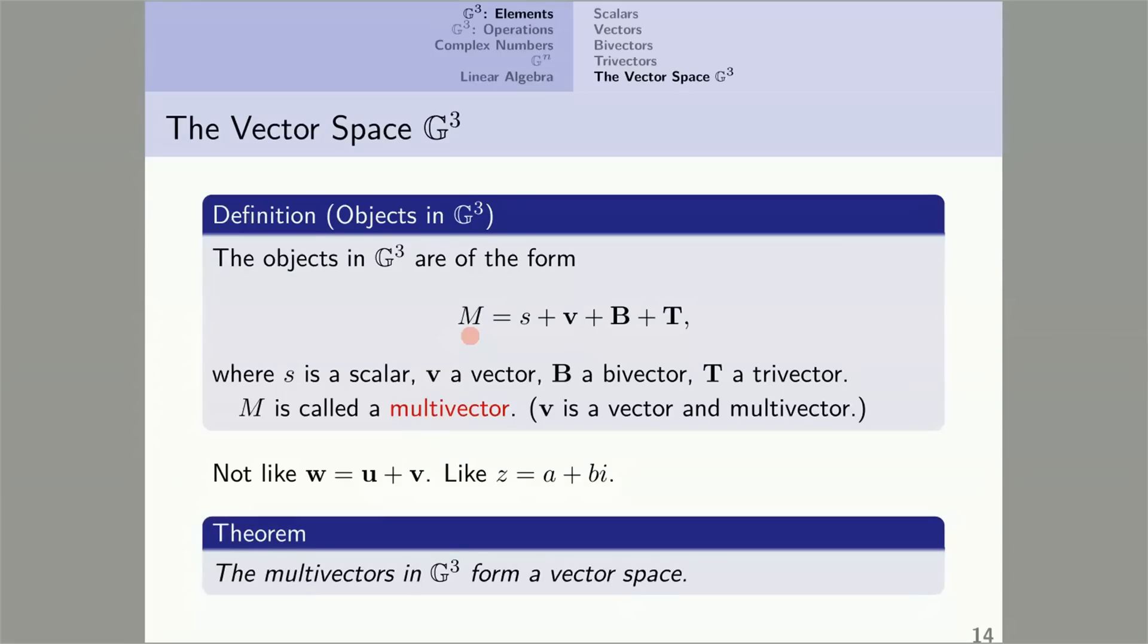Theorem. The multivectors in G3 form a vector space. What does this mean? Well, first of all, it means that there are two operations, scalar multiplication and multivector addition that can be performed. To multiply this multivector by a scalar, I multiply each of its four parts by the scalar. If I have another multivector N down here with its own scalar, vector, bivector, and trivector parts, I can add M and N by adding the scalar parts, the vector parts, the bivector parts, and the trivector parts. Under these two operations, the multivectors in G3 form a vector space.